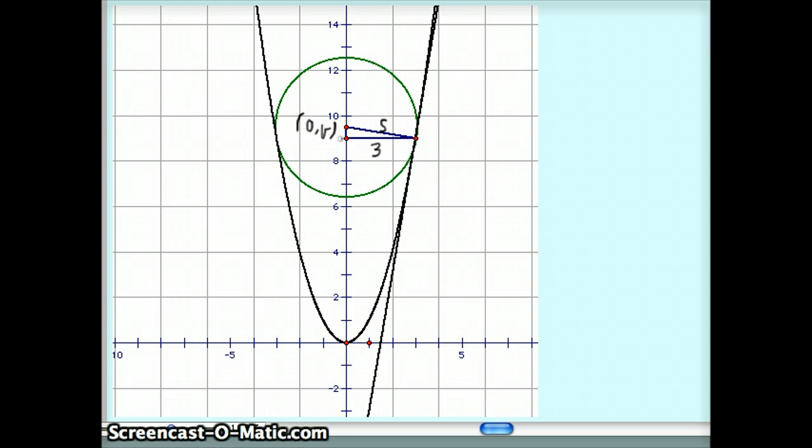And this length, if this length here is V, and this length here is 9, because the height of this point here is 9, it's at 3 common 9. Then this little small length here would have to be V minus 9.